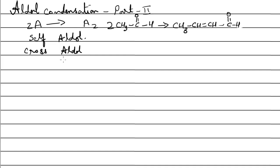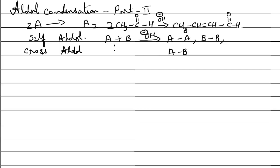The second type is known as the cross-aldol, where we take two different carbonyl compounds and make the reaction happen. If both possess alpha hydrogens, treating molecule A and molecule B with dilute base can give: an A-A aldol, a B-B aldol, and two versions of the A-B aldol, because A can lose the alpha hydrogen and attack B, or B can release the alpha hydrogen and attack A. You end up getting four products, all very similar — all aldehydes or ketones with similar properties — so they are very difficult to separate. This kind of cross-aldol is not beneficial for producing any particular compound.